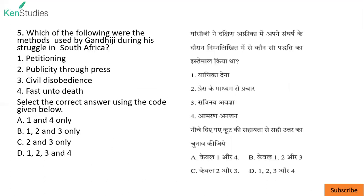Next. Which of the following were the methods used by Gandhi Ji during his struggle in South Africa? Gandhi Ji went to South Africa in 1893 for legal work — bakalat ke liye gaye the. When he went there, he saw the difficult conditions of Indians and Black people living there and started a movement.